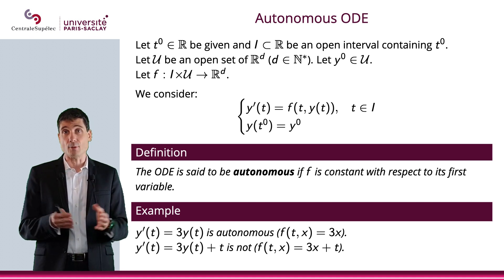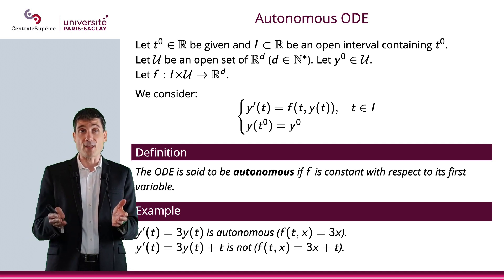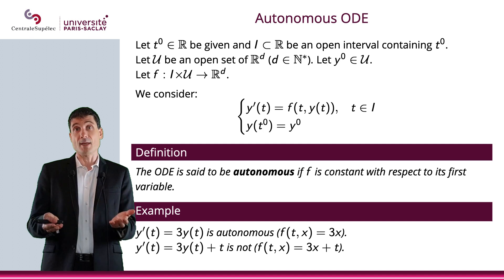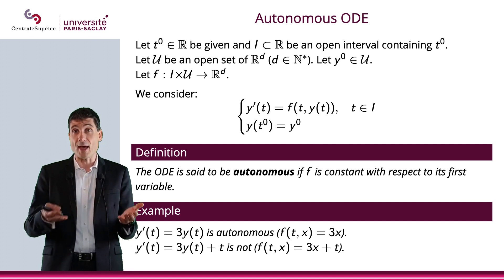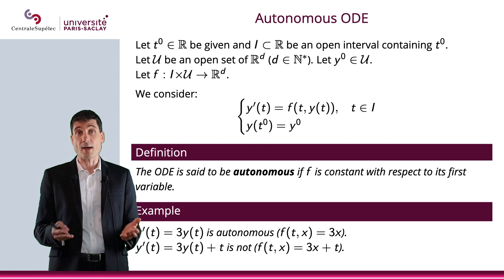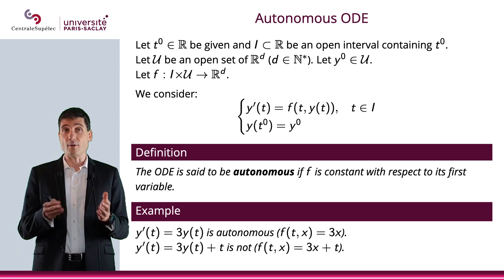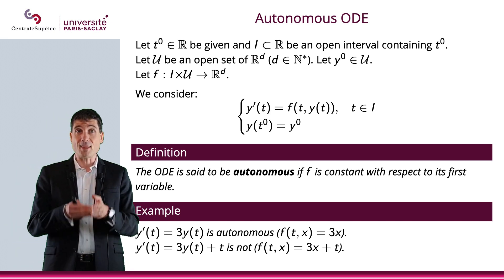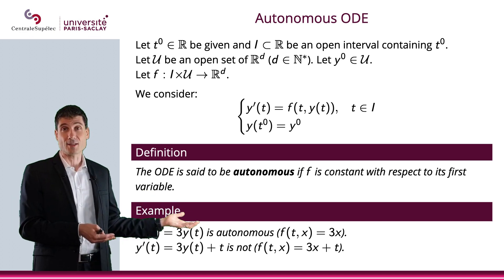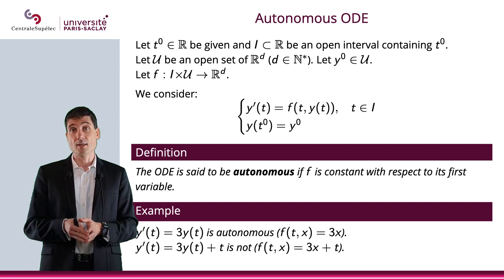Let me give you two examples. If y' of t equals 3y, the function f of t,x equals 3x, then it will be autonomous because f of t,x equals 3x does not depend on t — we'll just say f of x equals 3x. However, if y' of t equals 3y of t plus t, then f of t,x equals 3x plus t, and the ODE will not be autonomous.